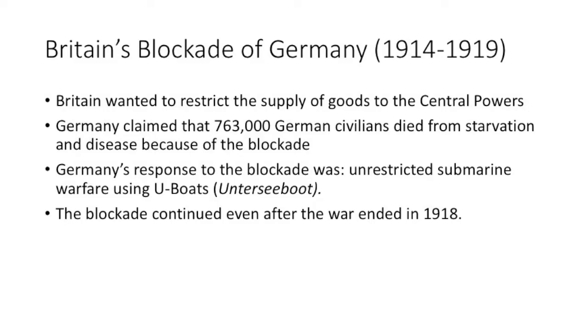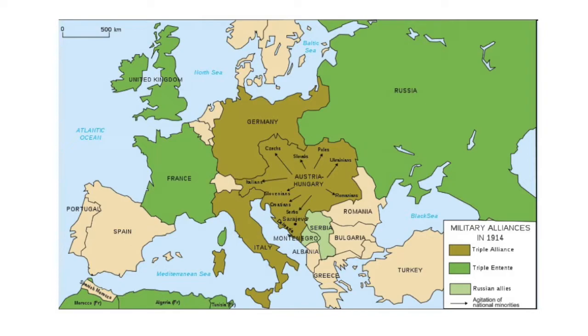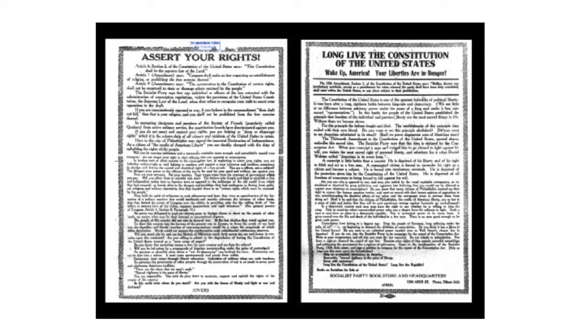Historian Howard Zinn would say we joined because of money. We joined in 1917 and were in the war a little over a year. At home, we also had the Bolshevik Revolution in Russia — they became communist — leading to the Red Scare in the 1920s. We got restrictions on speech: the Espionage and Sedition Acts. The Schenck v. United States case upheld these. Eugene V. Debs got 10 years in jail for giving an anti-war speech.